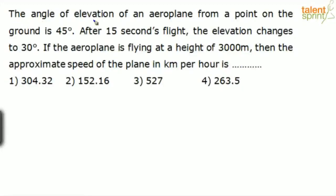The question is: the angle of elevation of an aeroplane from a point on the ground is 45 degrees. After 15 seconds of flight, the elevation changes to 30 degrees. If the aeroplane is flying at a height of 3000 meters, then the approximate speed of the plane in kilometers per hour is? Options: 304.32, 152.16, 527, and 263.5.